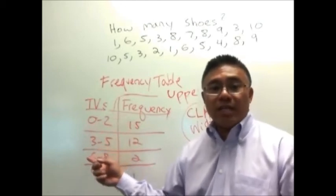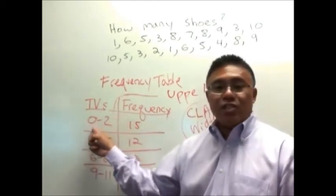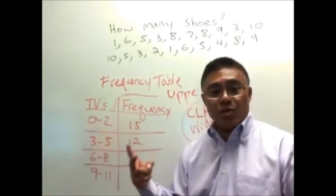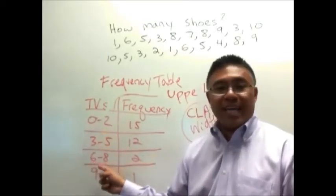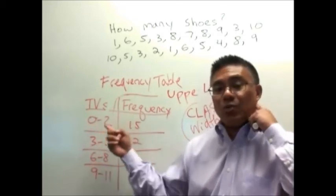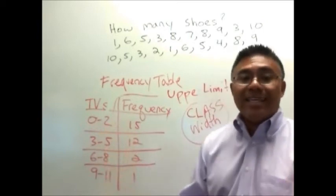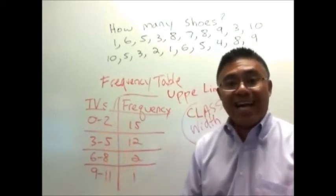Now intuitively, you might say, hey, look, this goes from zero to two. The difference is two. This goes from three to five. The difference is two. This goes from six to eight. The difference is two. So the class width must be two. The size of the class must be two. Now that's an incorrect way of calculating class width.